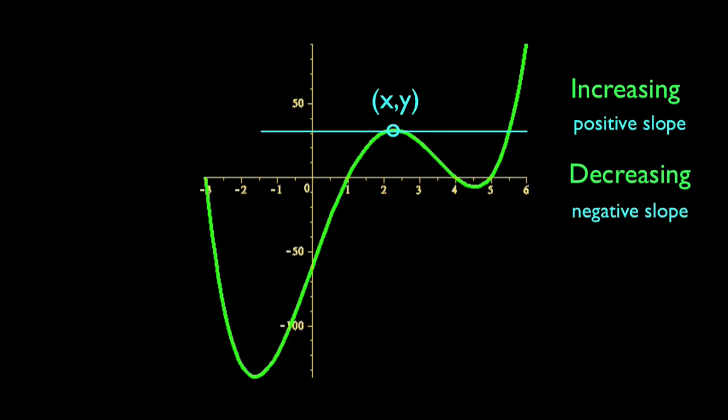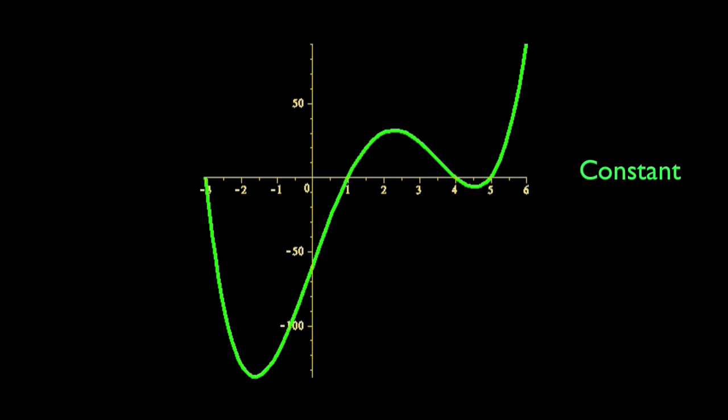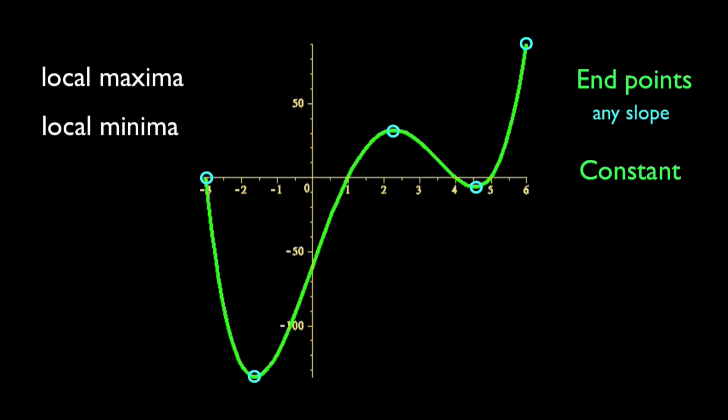Momentarily, the function will be neither increasing nor decreasing. It will instead be constant, if only for the briefest moment. These constant points, along with the endpoints of the continuous region, which can have any slope, are where we find local maxima and local minima.